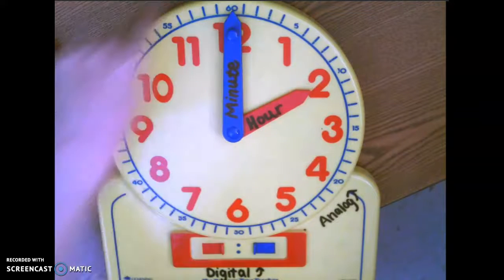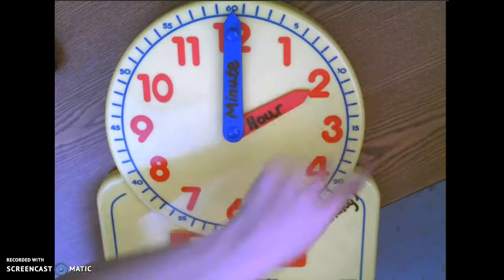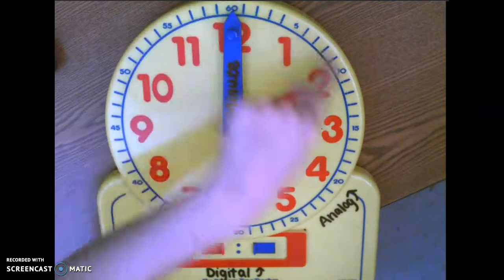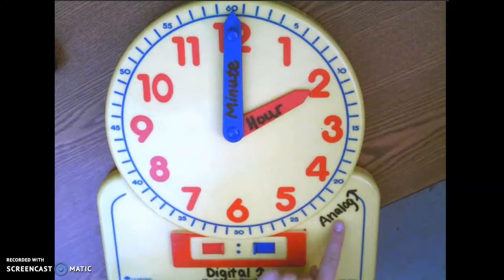So the top part right here, this big circle, which kind of clock is this? This is the analog clock. Can you say analog clock? Analog clock.